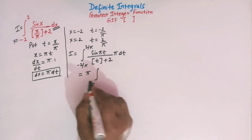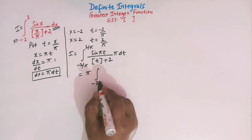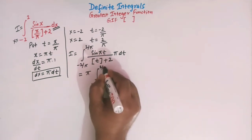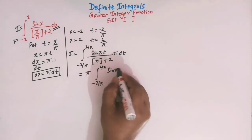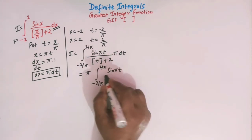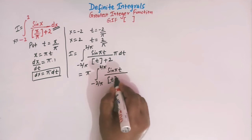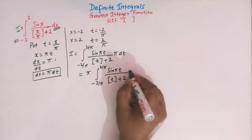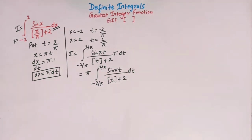Since pi is a constant we can take it outside, giving us pi times the integral from minus 2/π to 2/π of sin(πt) over the greatest integer of t plus 2, dt.